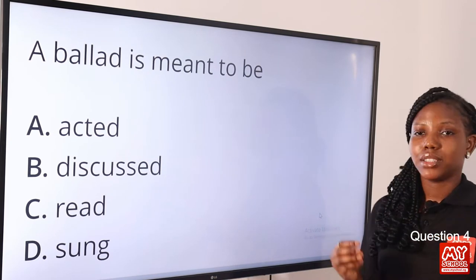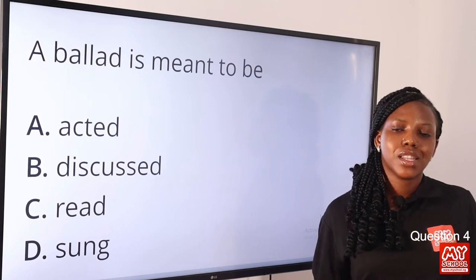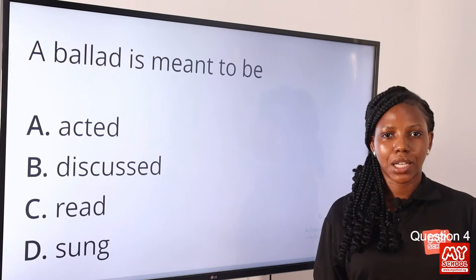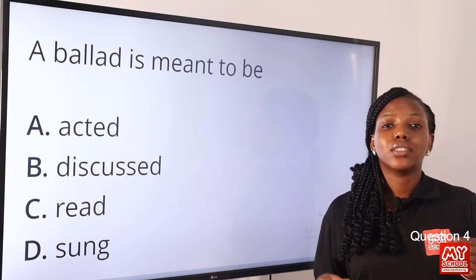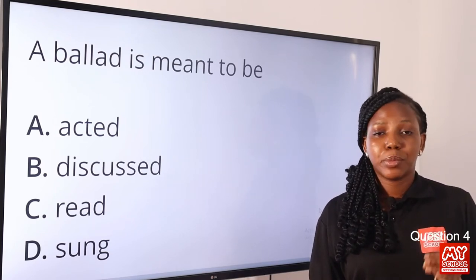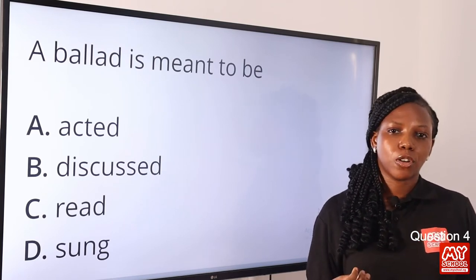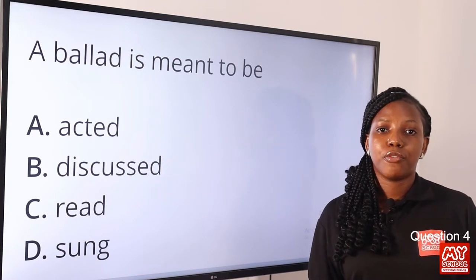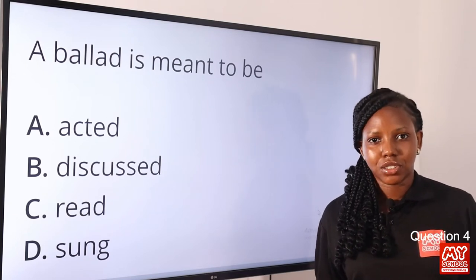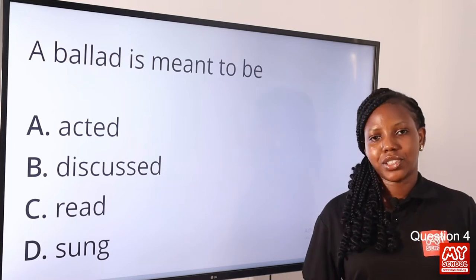Question 4. A ballad is meant to be dash — option A: acted, option B: discussed, option C: written, option D: sung. The answer is sung. A ballad is a poem or a song that narrates a story in short stanzas — typically a series of four-line stanzas that is meant to be sung. So it is traditionally set for music, meant to be sung as an oral tradition. It is poetic and at the same time musical. So the answer is option D, sung.